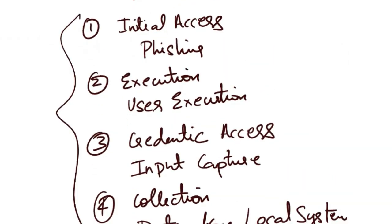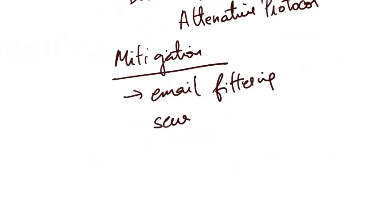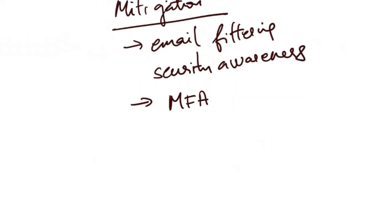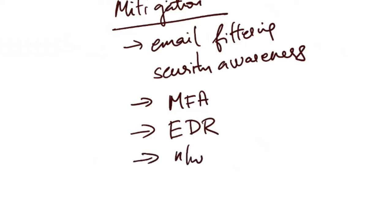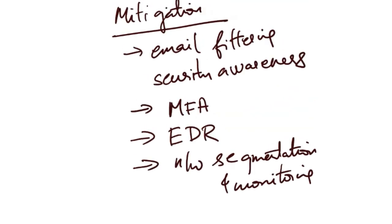For this MITRE ATT&CK analysis, mitigations include: implementing email filtering and security awareness training to detect and prevent phishing; enforcing multi-factor authentication (MFA) to mitigate credential theft; deploying endpoint detection and response (EDR) solutions to detect malicious endpoint activity; and implementing network segmentation and monitoring to detect and block data exfiltration attempts. By understanding adversary tactics and techniques, organizations can better prepare and defend against cyber attacks.